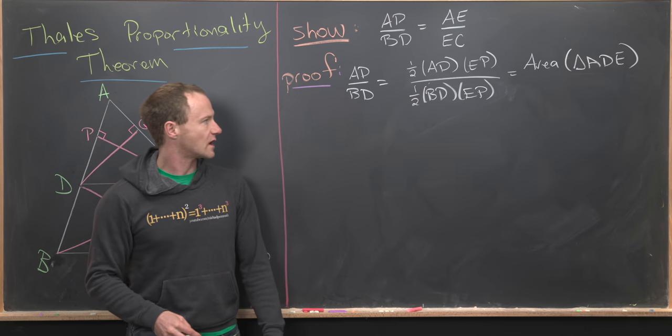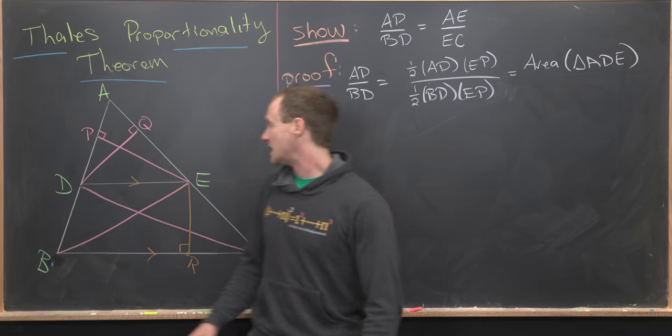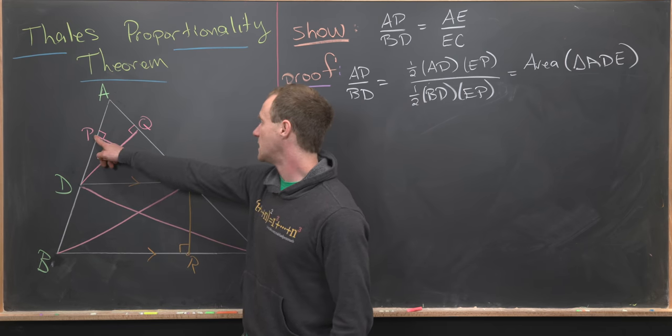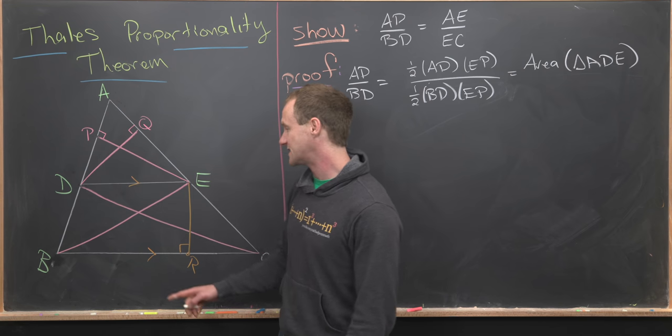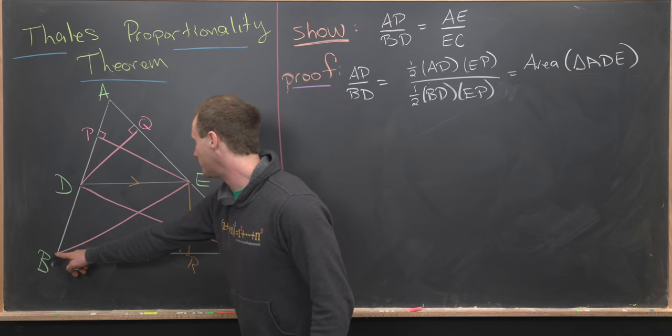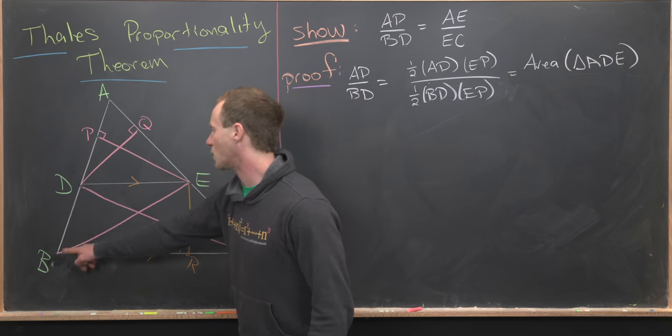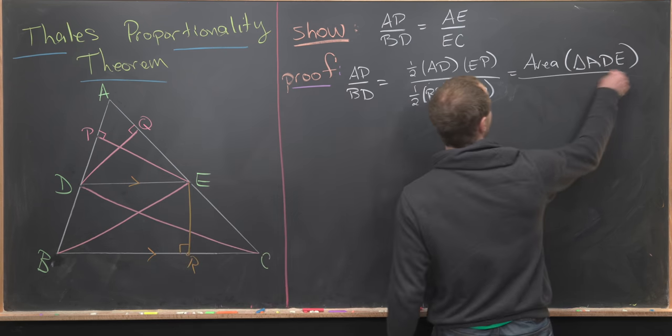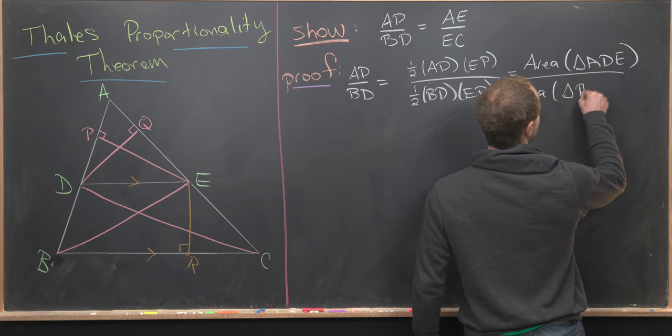Then let's see what's going on in the denominator. We have one half BD EP. Notice EP is an exterior altitude for triangle BED or BDE. So that means in the denominator here we have the area of triangle BDE.